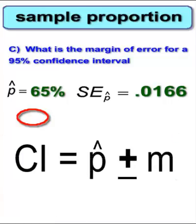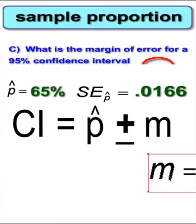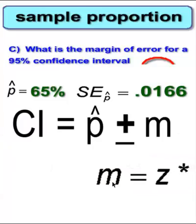The margin of error, as you'll recall, is the z-star, and that references the level of confidence you're looking for in this problem. It's a 95% CI. Therefore, you should know by heart that it's 1.960.